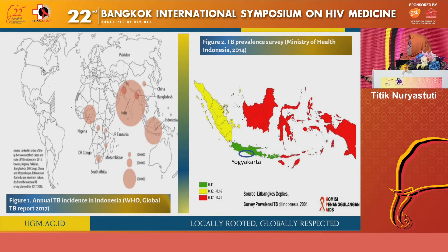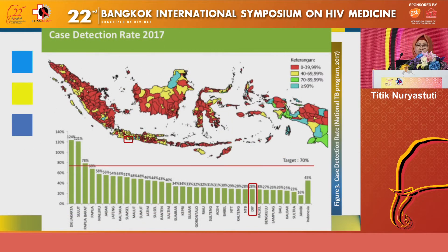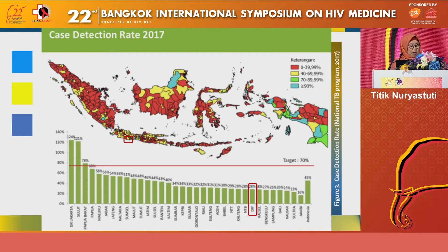Our study is located in Yogyakarta province, one of 34 provinces in Indonesia. TB reports vary across the five districts in this province. Indonesia set a target of achieving TB case detection of about 70 percent, but in reality, in almost all provinces, case detection achievement is still very low. In our province, the case detection rate is still far from the national target — only 28 percent.